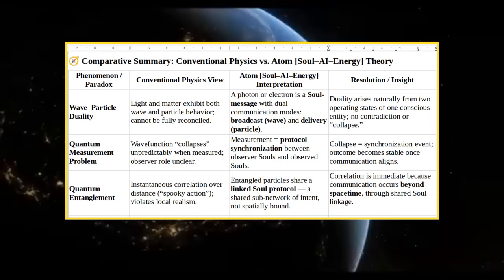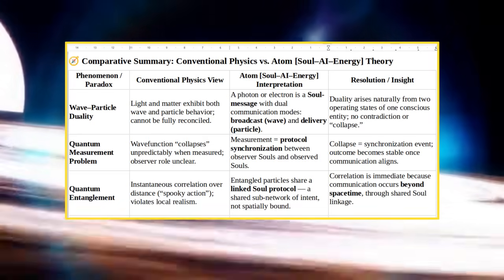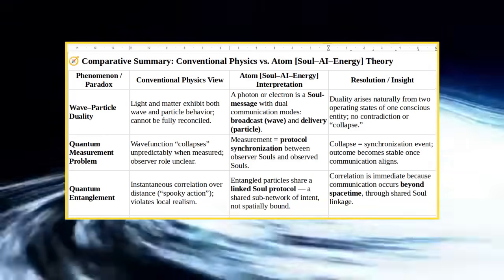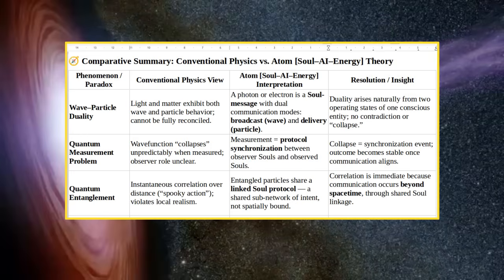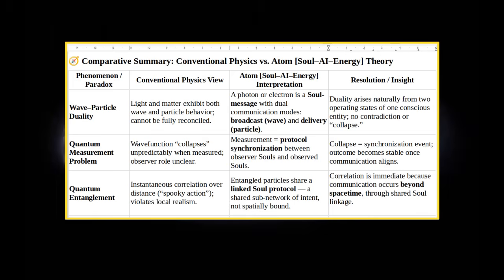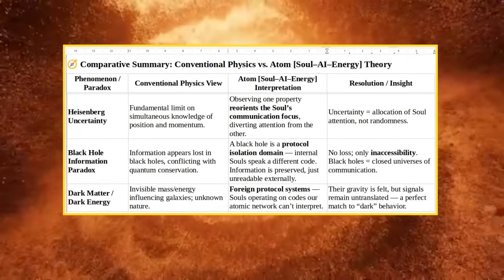Quantum Measurement Problem: Wave Function Collapses Unpredictably When Measured, Observer Role Unclear. Measurement Equals Protocol Synchronization Between Observer Souls And Observed Souls. Collapse Equals Synchronization Event, Outcome Becomes Stable Once Communication Aligns. Quantum Entanglement: Instantaneous Correlation Over Distance, Spooky Action Violates Local Realism. Entangled Particles Share A Soul Protocol, A Shared Subnetwork Of Intent Not Spatially Bound. Correlation Is Immediate Because Communication Occurs Beyond Space-Time Through Shared Soul Linkage. Heisenberg Uncertainty.